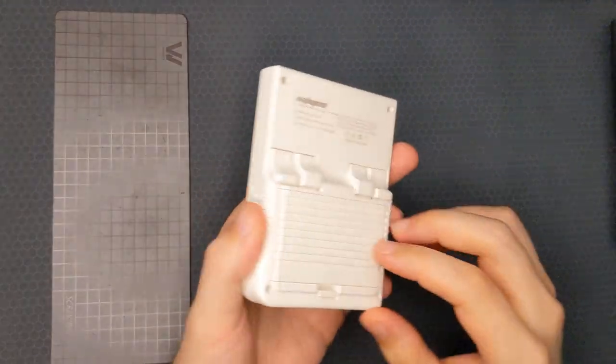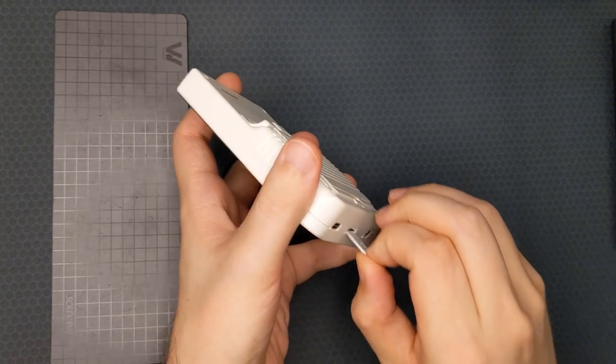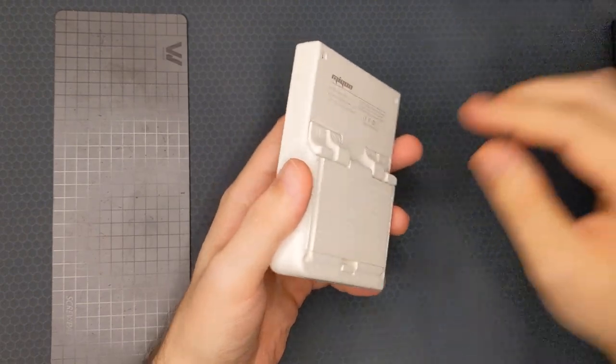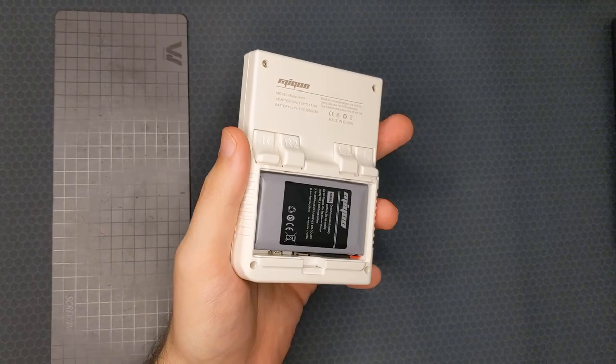The first thing we're going to want to do is remove the SD card just to get it out of the way so we're not at risk of damaging it. And then taking off the battery case on the back.